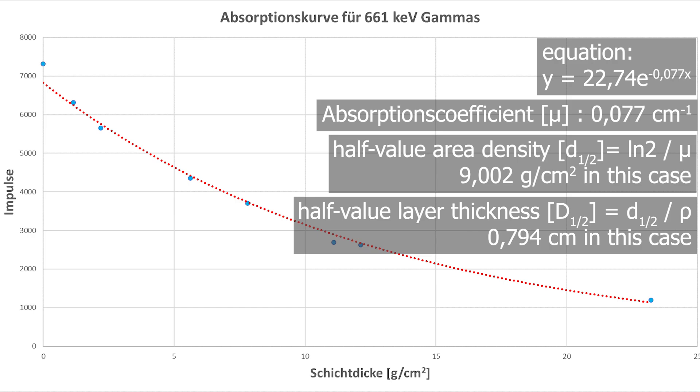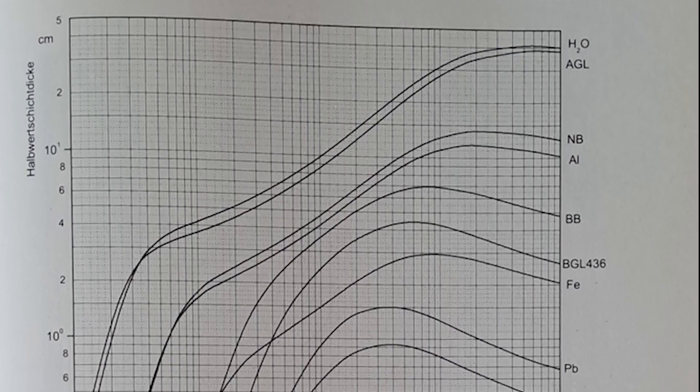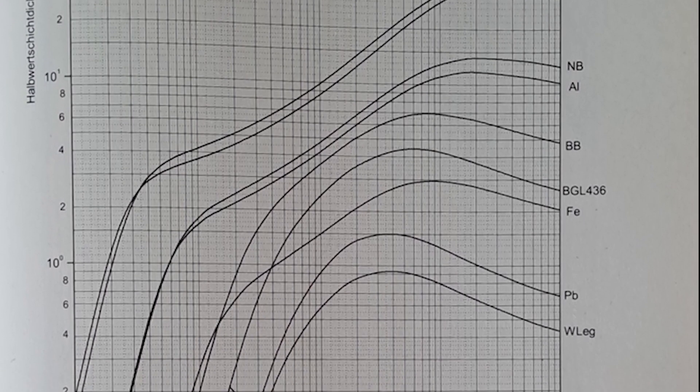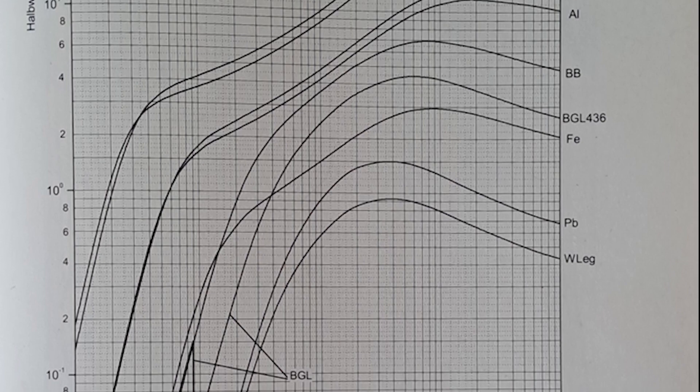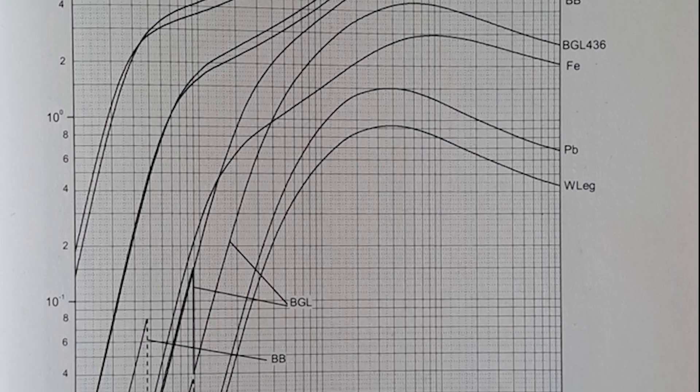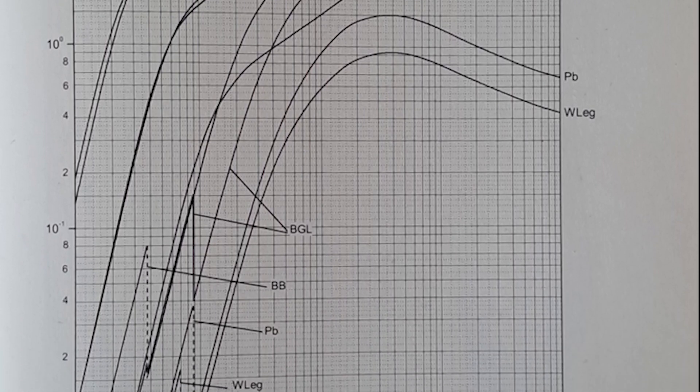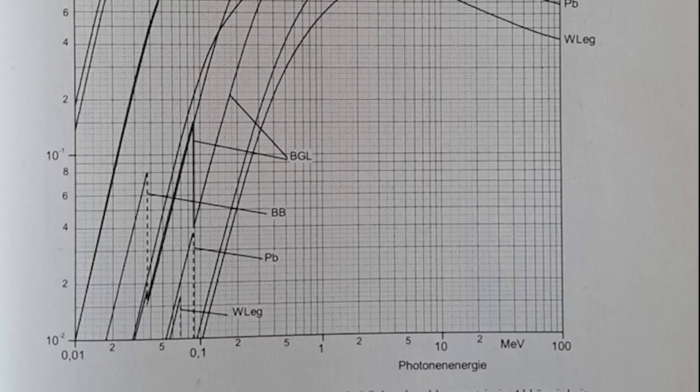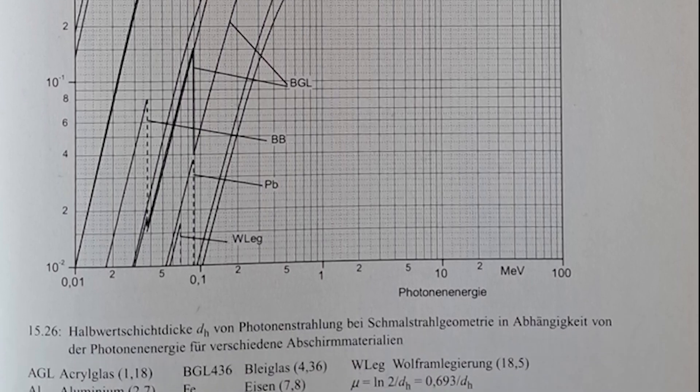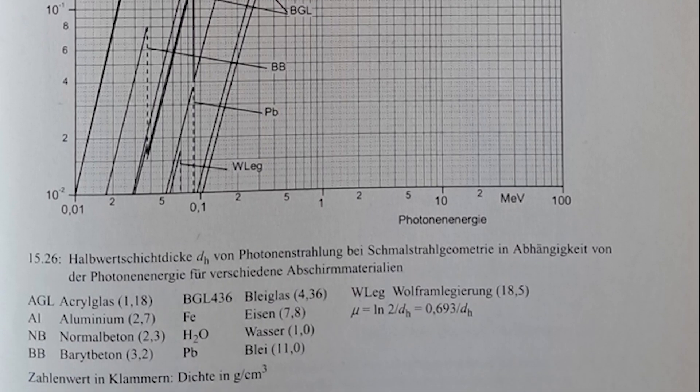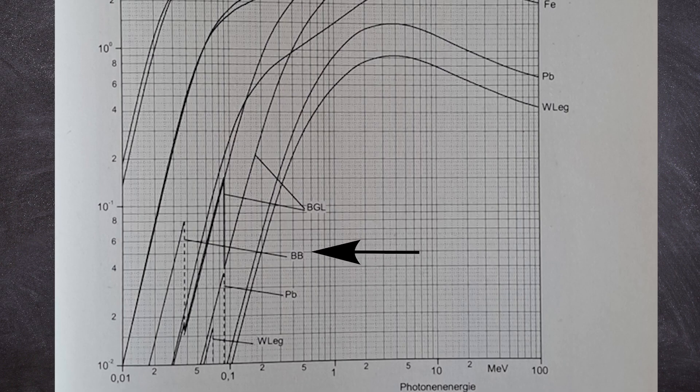You can look up the half value layer thickness in the book Fundamentals of Practical Radiation Protection by Vogt and Schultz. And for our students I've included the literature reference in the video description. Just use that so that the 12 people in our practical course don't have to fight for this one copy that we have. And as we see, 0.6 mega electron volts for lead, we arrive at 0.6 centimeters. Hmm, a discrepancy. How can that be?